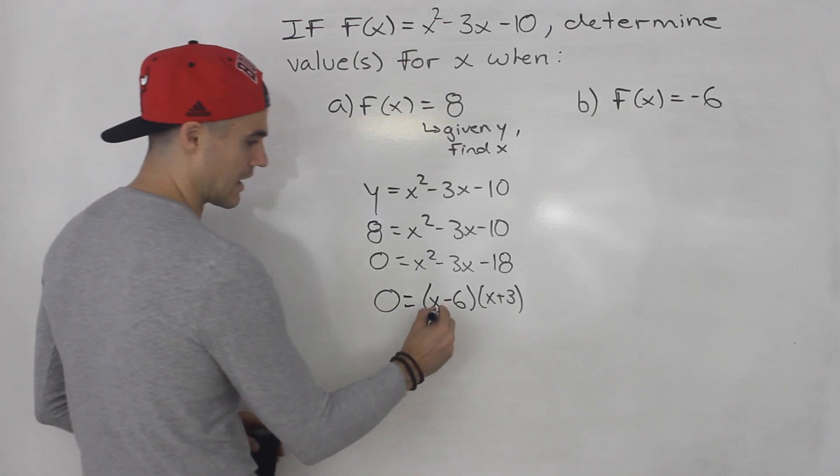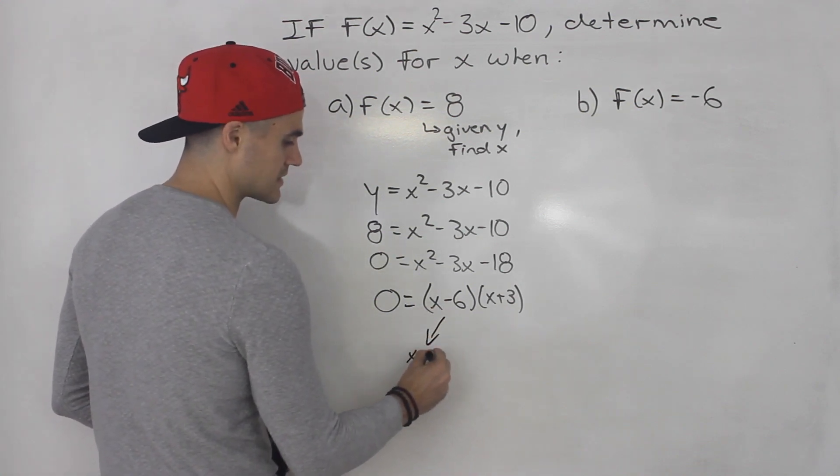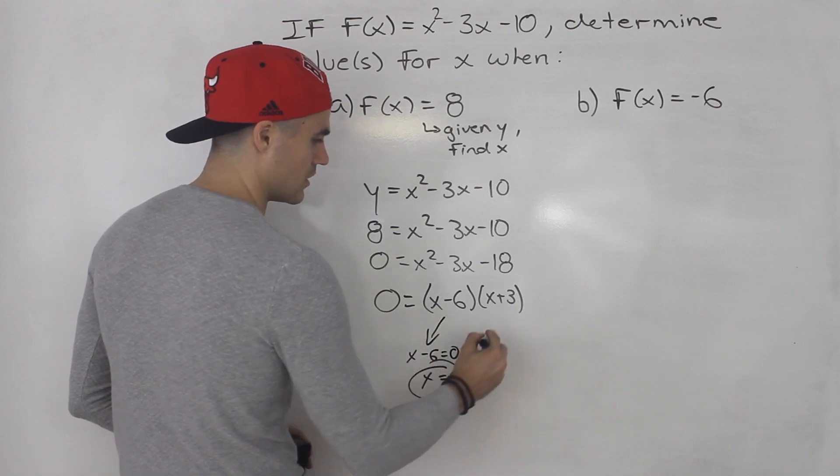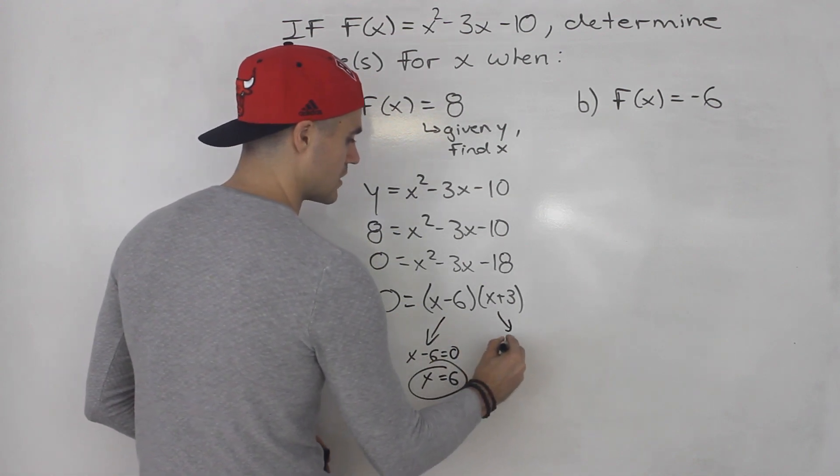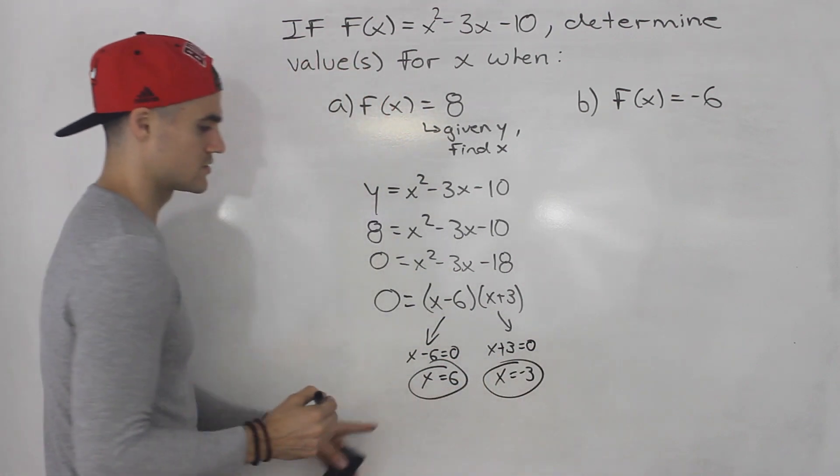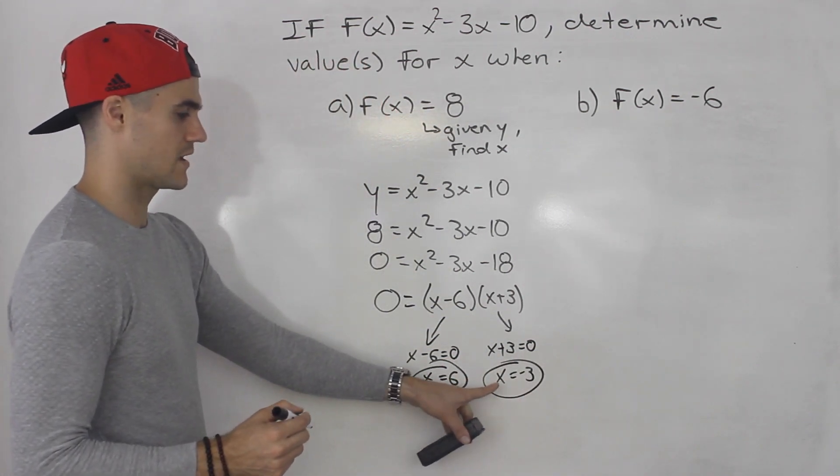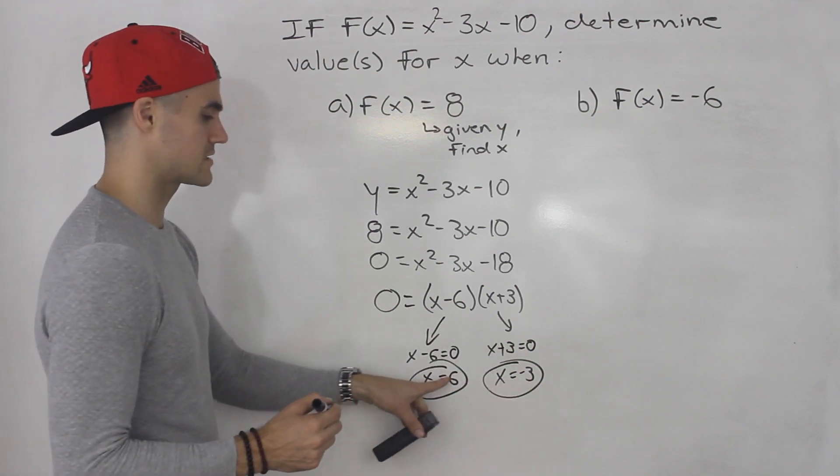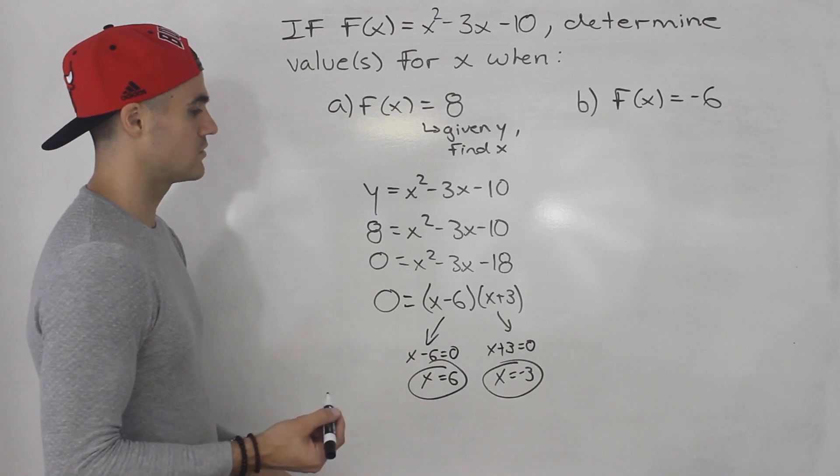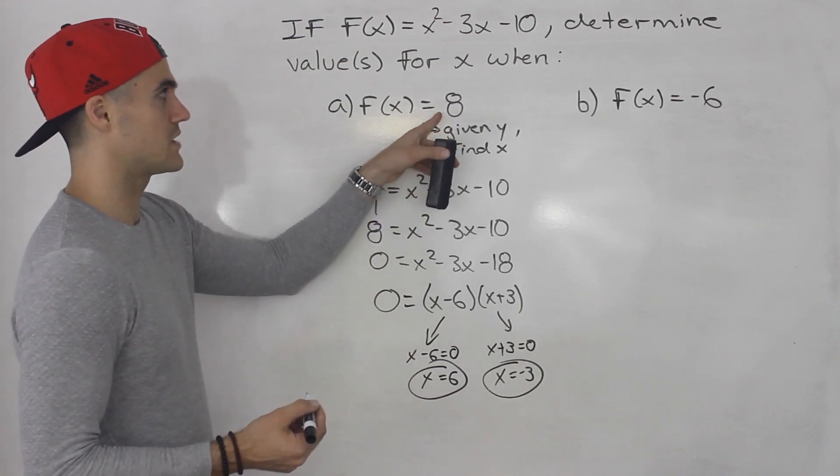And then from here you can tell that x - 6 is going to equal 0 when x equals 6. Or x + 3 is going to equal 0 when x equals -3. So those are your two answers. Basically x can be -3 or x is 6. So at those two x values the value of the function is going to be 8.